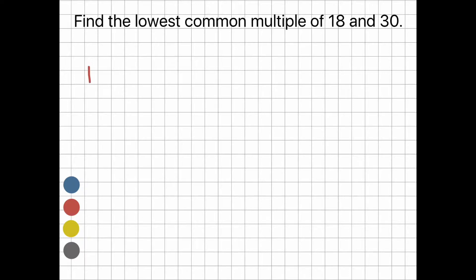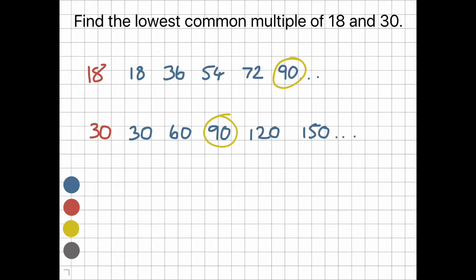So 18, you have 18, 36, 54, 72, 90, and so on. For 30, we have 30, 60, 90, 120, 150, and so on. Then we find the smallest number on both lists. You can see here that it's 90.